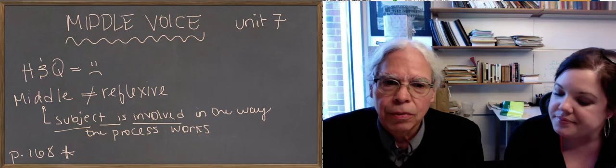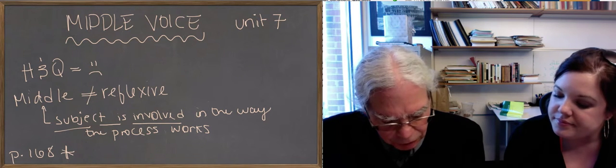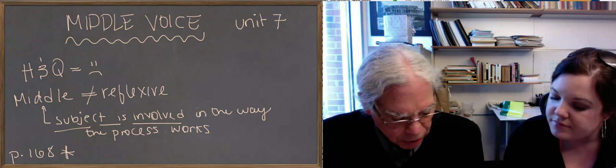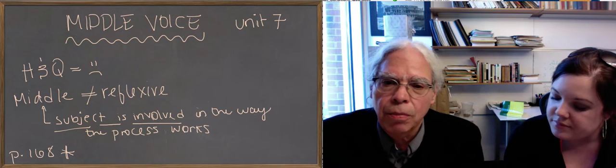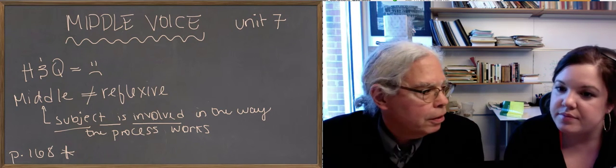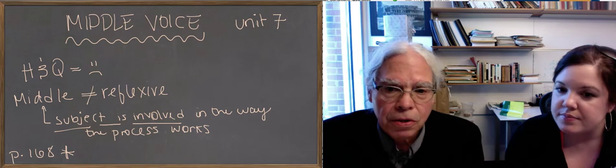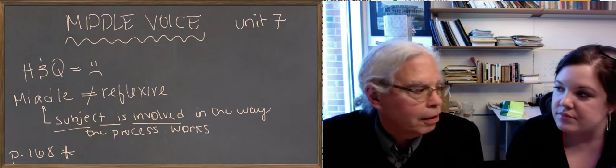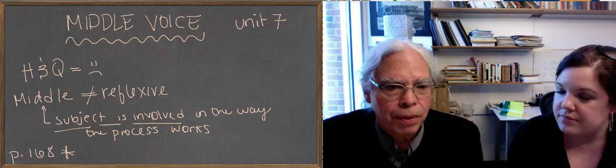So you can see how the subject gets involved in the process. Here's another one. The verb powo means to make someone or something stop in the active, but in the middle it means cease, like I cease doing something.